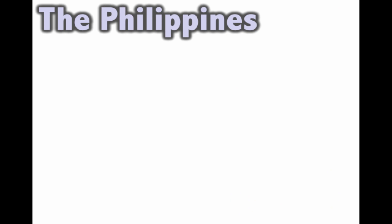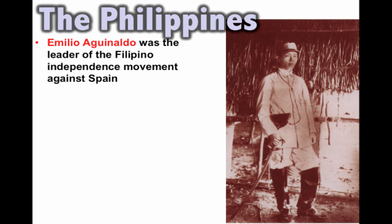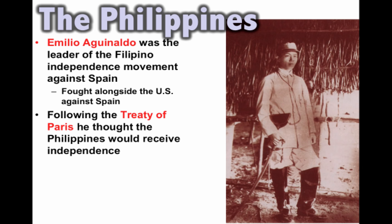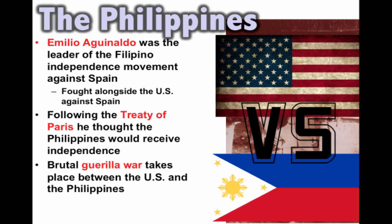The big controversy was the Philippines. Emilio Aguinaldo was the leader of the Filipino independence movement against Spain. He fought alongside the United States during the Spanish-American War and thought his country would receive independence when the war was over. Instead, a brutal guerrilla war broke out between the U.S. and the Philippines, lasting three years with thousands of lives lost — many more on the Filipino side. Formal independence would not come to the Philippines until 1946.